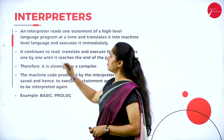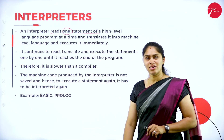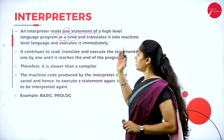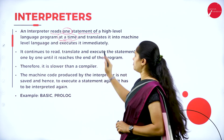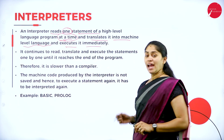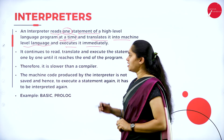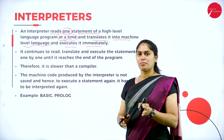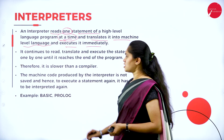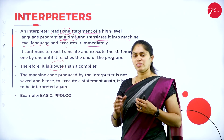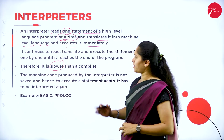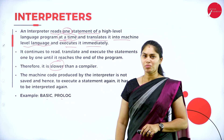An interpreter reads one statement of a high level programming language at a time — not the whole program. It reads one statement, translates it into equivalent machine level language, and executes it immediately if there is no error. Because it translates one statement at a time, the interpreter is slower and requires more space than the compiler. Examples of interpreter-based languages are BASIC and Prolog.